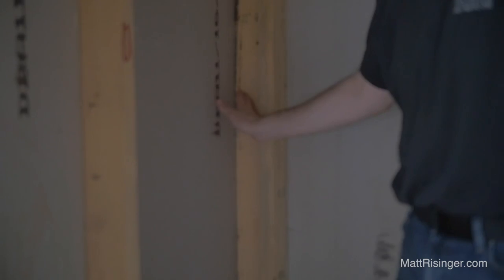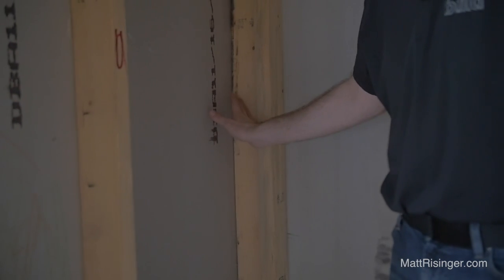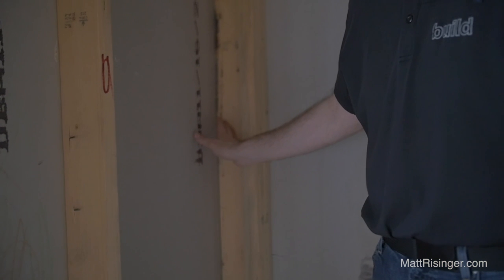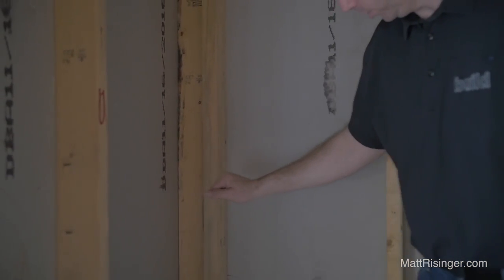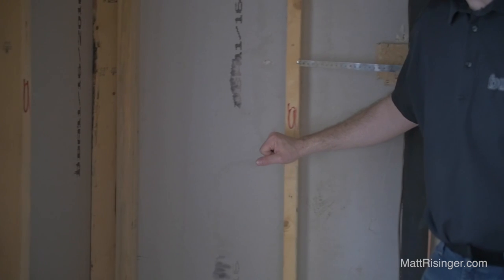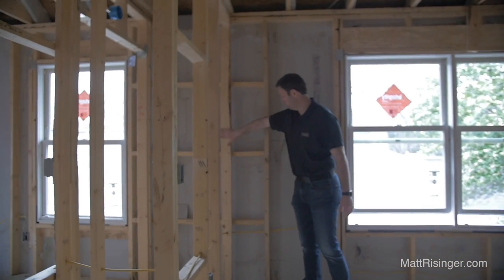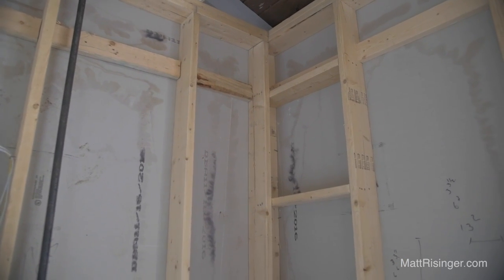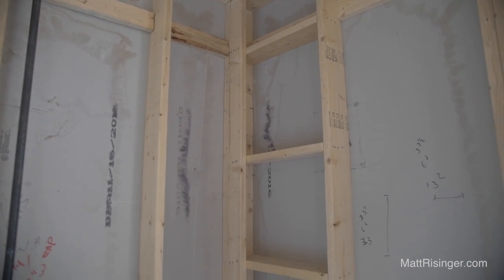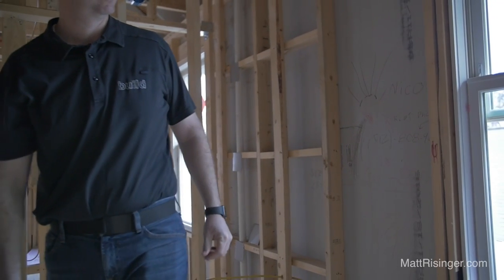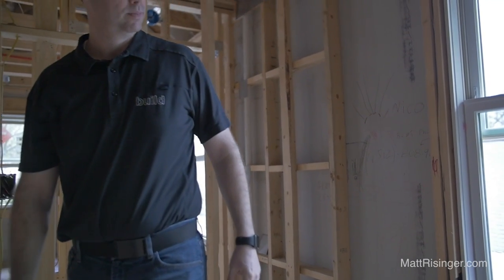Next let's talk about exterior corners. In this advanced frame house we've got two-stud exterior corners. That gives us plenty of structure, but now we're able to run the insulation easily all the way to the outside edge of the wall. We've ladder blocked this one so we can hang drywall traditionally. You could also go with a drywall clip to eliminate that, but I like having the structure for the drywall guys — makes everything really easy and normal.